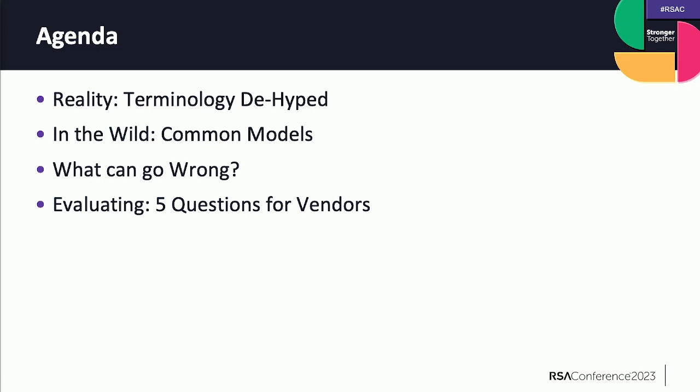By intermediate technical, what this is: if you have never heard of AI or ML before, it's a little bit past that, but this is not going to go into the advanced technical level. I'm going to be talking about the terminology, dehyping it, giving you examples of the kinds of models that are in use right now, what they're good for, what they're not so good for.